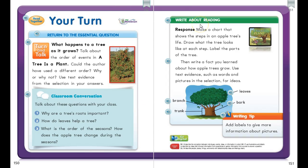Now we're going to write about reading. Make a chart that shows the steps in an apple tree's life and draw what the tree looks like at each step, labeling the parts of a tree — here's an example. Then write a fact about what you learned about how apple trees grow, and use text evidence like words and pictures from the selection for your ideas. Your writing tip is to add labels to give more information about pictures.